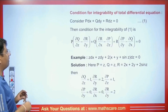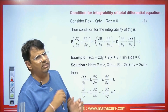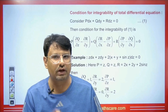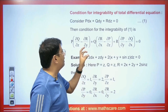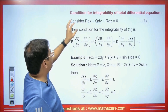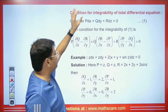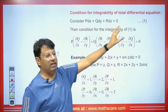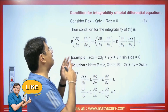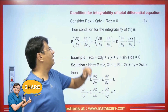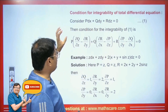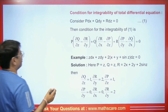Now we will discuss the first method, which is called the inspection method. Whenever a total differential equation is given to solve, the first condition that must be satisfied is the integrability condition. Whatever total differential equation is given, it should satisfy this condition so that we can integrate it — meaning we can get rid of dx, dy, dz. Students have trouble remembering this condition, so I will explain it.